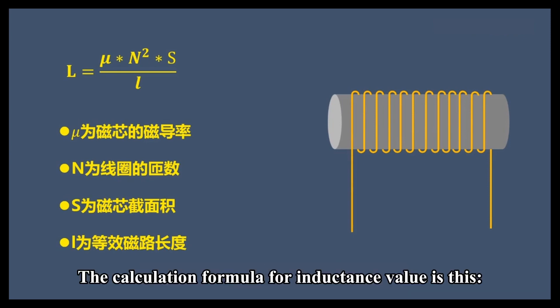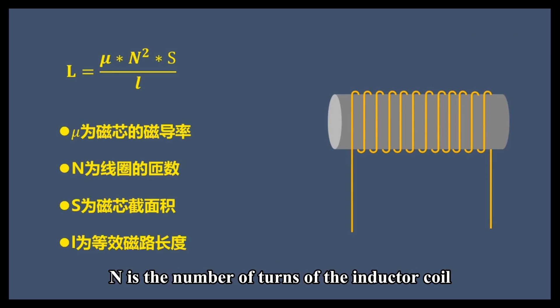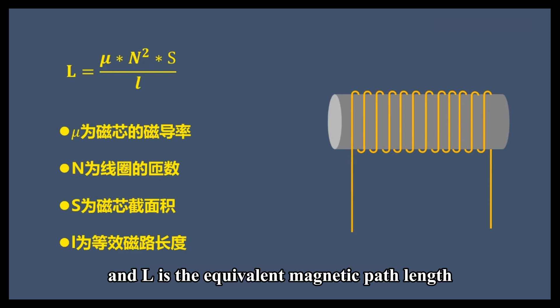The calculation formula for inductance value is: N is the number of turns of the inductor coil, S is the cross-sectional area of the core, and L is the equivalent magnetic path length.